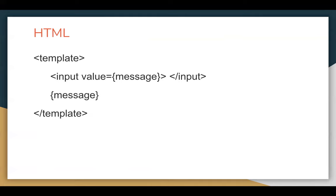Moving forward, the third file is our CSS file. In our HTML we are using an input markup. If you want to define CSS for this input markup, you write the markup name 'input' and in curly braces write the complete CSS. For example: color colon green — meaning when the input markup renders on the UI, it will have the color value green.